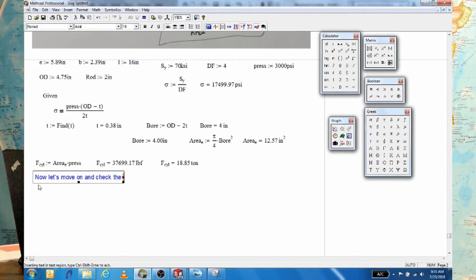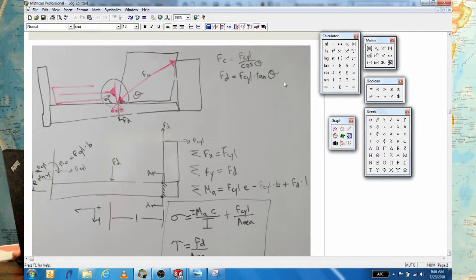So let's put our governing equation down here. Our moment at A is equal to F of the cylinder times E minus B plus the force down times L. Now, it's saying all of a sudden, hey, I don't know what FD is. Well, from our equation up here, FD is equal to the force of the cylinder times the tangent of the angle.